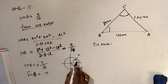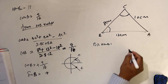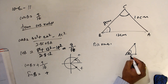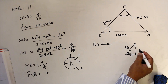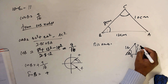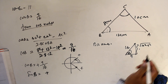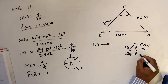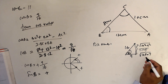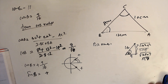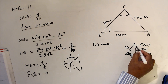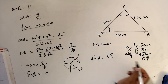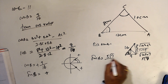Since B is acute (first quadrant), sin B is positive. Using the triangle with hypotenuse 16 and adjacent 9, the opposite side is √(16² - 9²) = √(256 - 81) = √175 = √(25×7) = 5√7. Therefore sin B = 5√7 / 16.